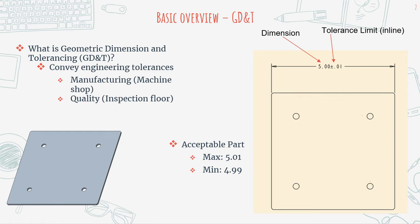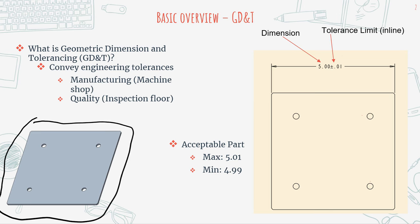Before we really get into that, I want to give a quick overview of what GD&T is and why we care about it. When you model a part within your 3D modeling software, the part is theoretically perfect. The dimensions of the features are exactly as you dimension them to be, and the sides might be perfectly flat — there's no roughness unless you specifically define it to be so.